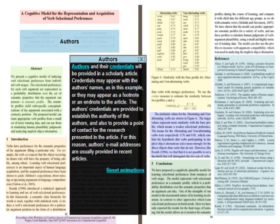Authors and their credentials will be provided in a scholarly article. Credentials may appear with the author's names, as in this example, or they may appear as a footnote or endnote to the article. The author's credentials are provided to establish the authority of the authors and also to provide a point of contact for the research presented in the article. For this reason, authors' email addresses are usually provided in recent articles.